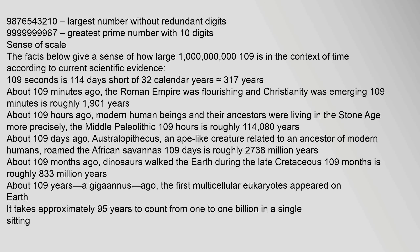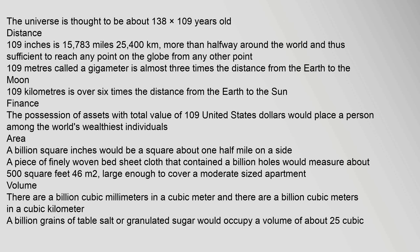About 10^9 months ago, dinosaurs walked the earth during the late Cretaceous — 10^9 months is roughly 83.3 million years. About 10^9 years (a gigaannus) ago, the first multicellular eukaryotes appeared on earth. It takes approximately 95 years to count from 1 to 1 billion in a single sitting. The universe is thought to be about 13.8 times 10^9 years old.